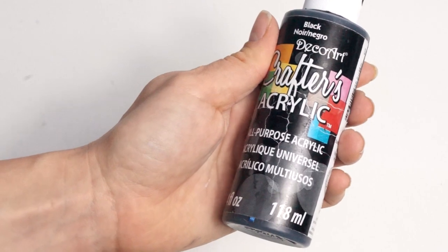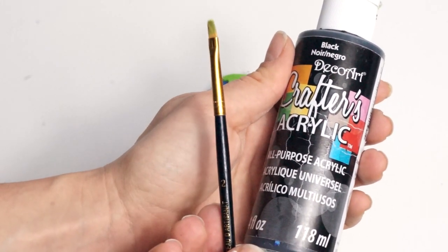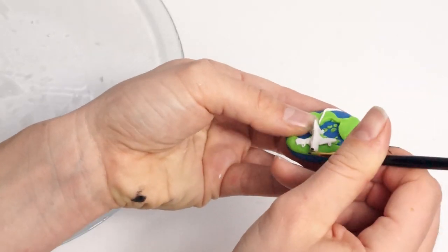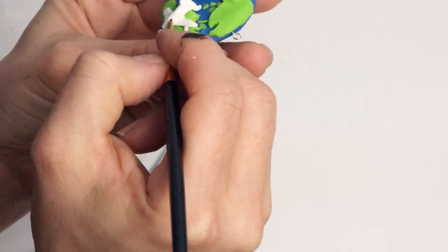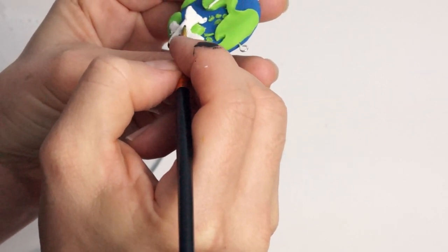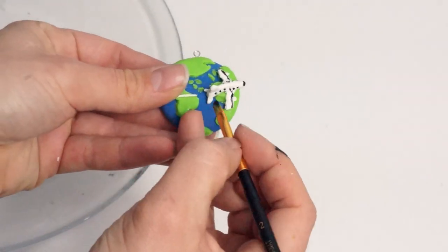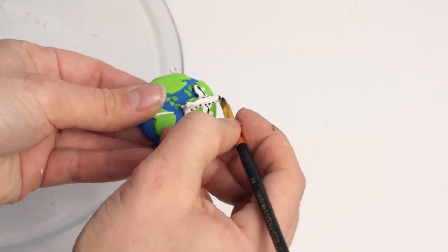You'll need black acrylic paint and a thin paint brush. Now start painting on the airplane windows. Take your time since you are painting on very small details and you don't want the windows too large. You can also put some details on the wings like I did.